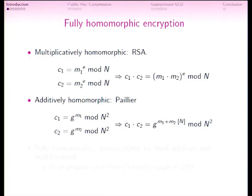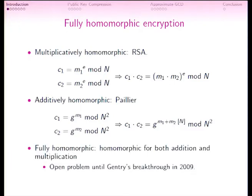There are also schemes which are homomorphic for addition. For example, Paillier's scheme: given the ciphertext for M1 and ciphertext for M2, if you multiply them modulo N squared, you get an encryption of M1 plus M2 modulo N.